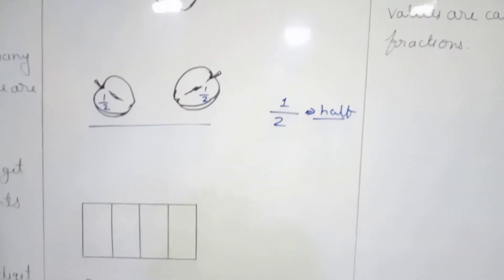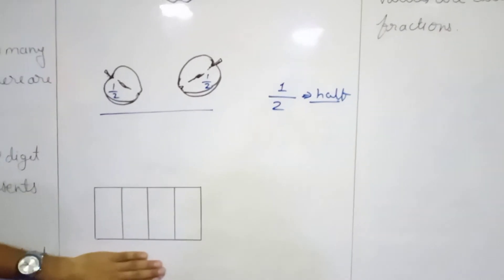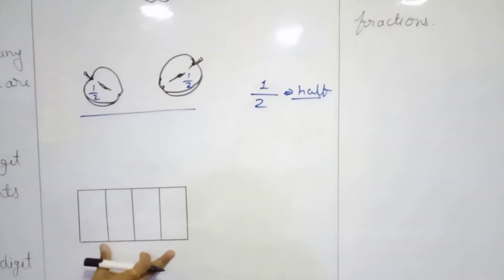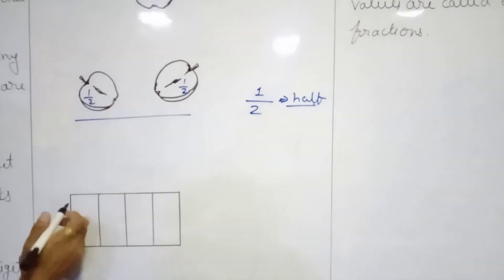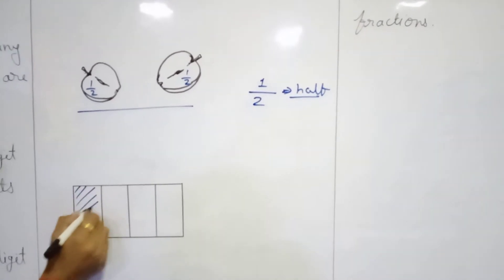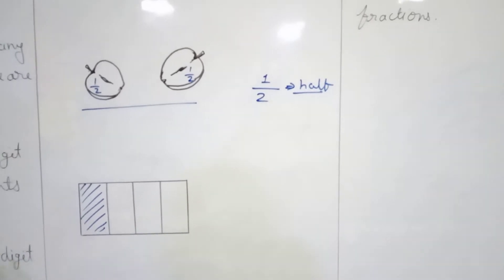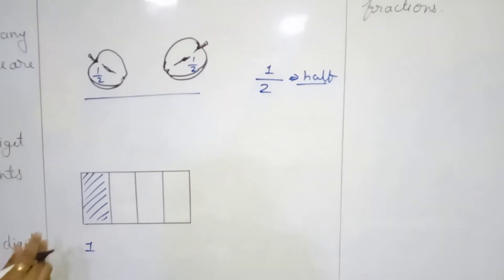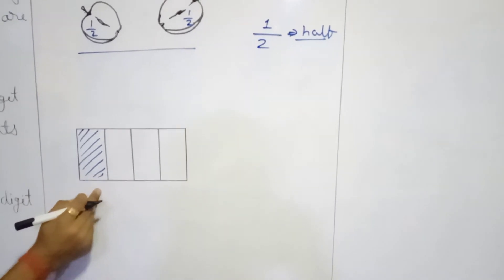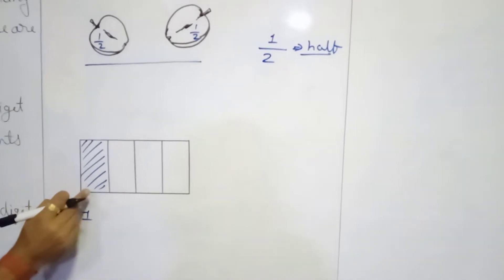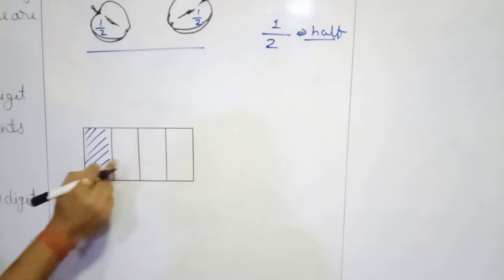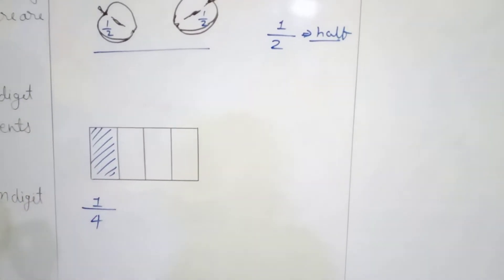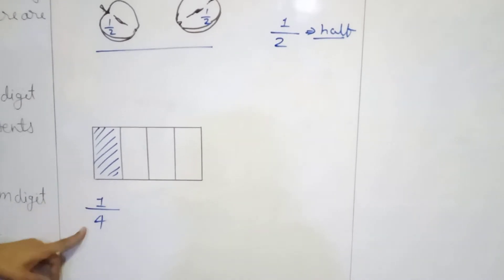Let's see another example. Here we have a strip and that is divided into 4 equal parts. I am talking about this shaded part. That is 1. Out of how many total parts do we have? 1, 2, 3, 4. Total how many parts we have? 4. So that will become the denominator at the bottom, making it 1 upon 4.